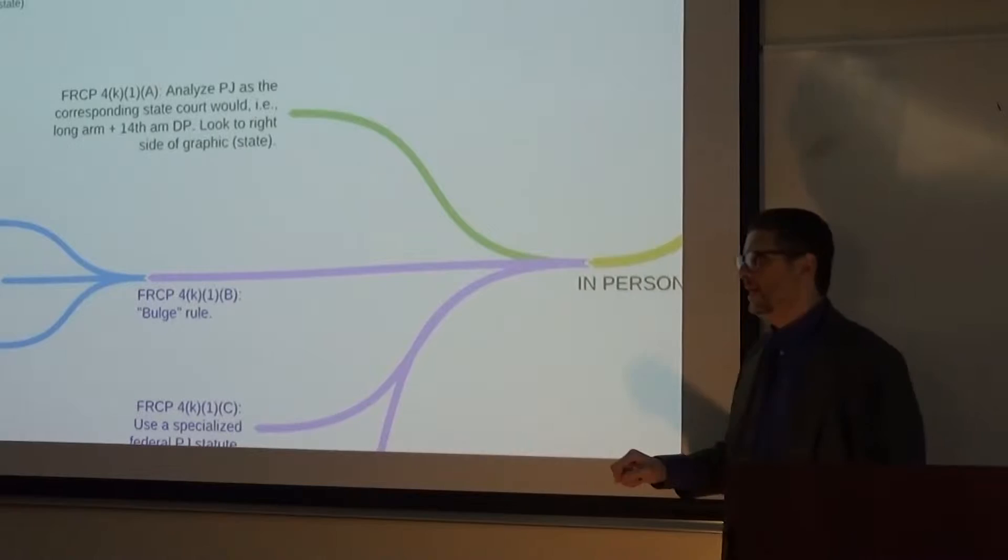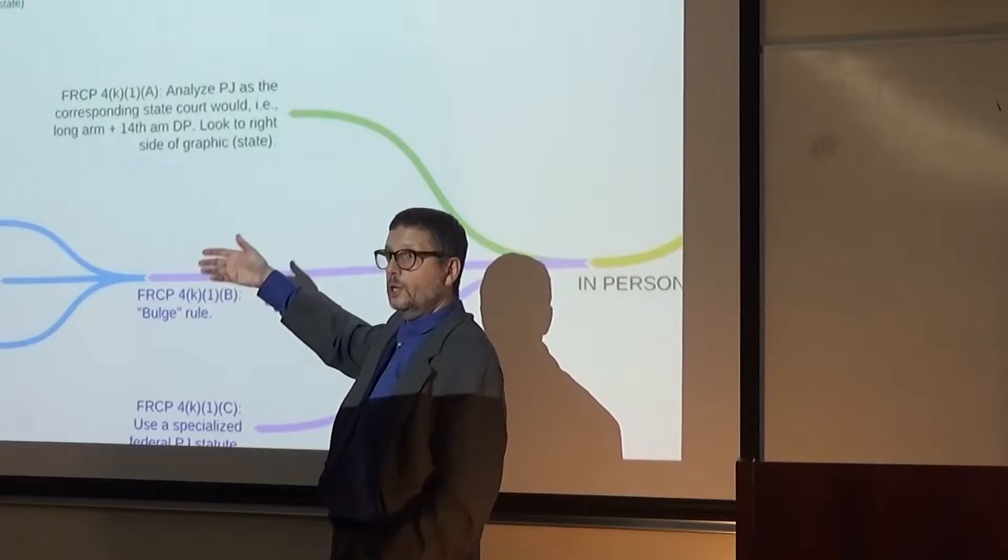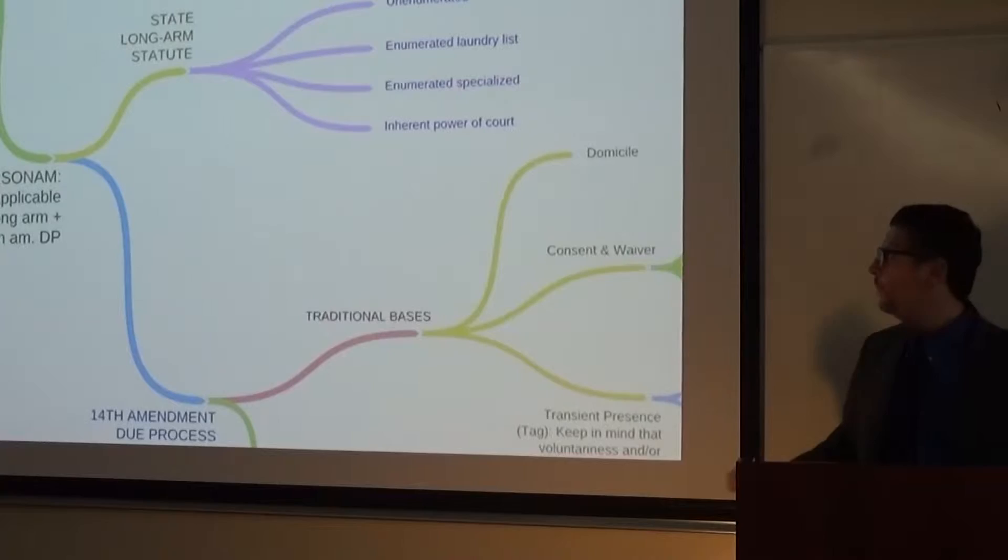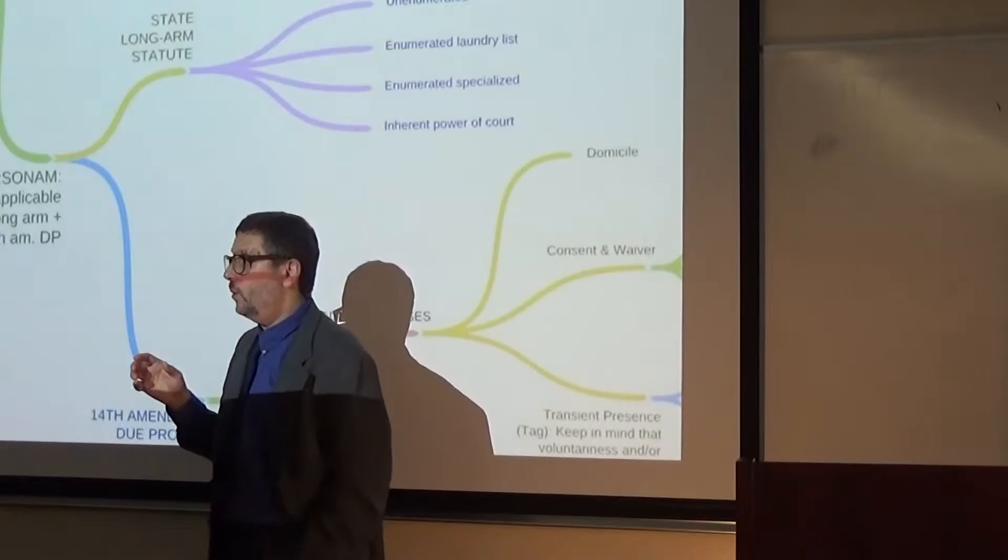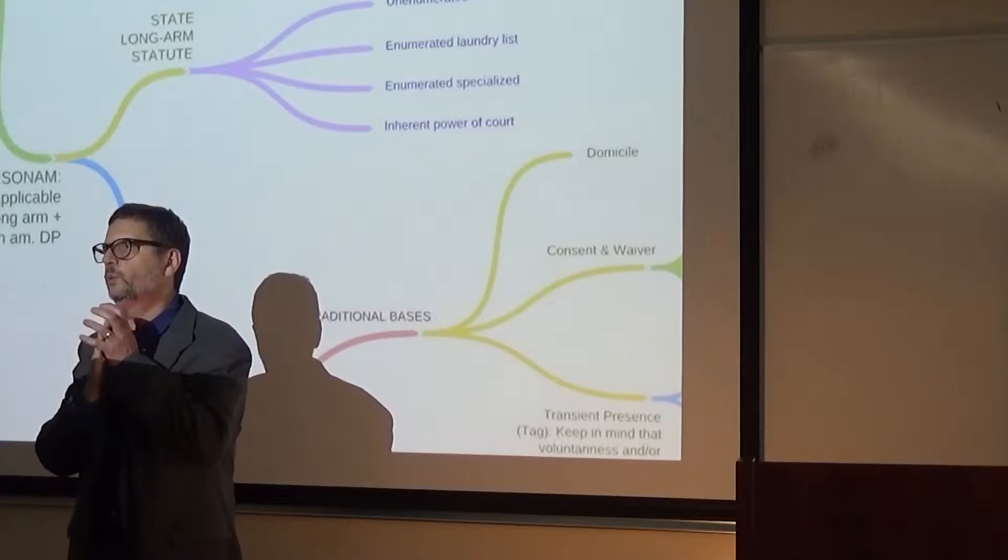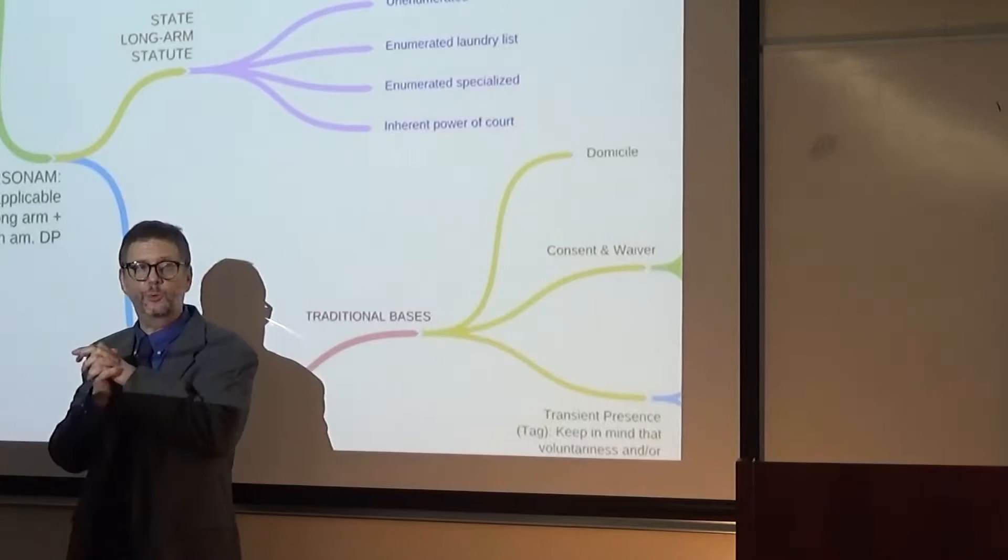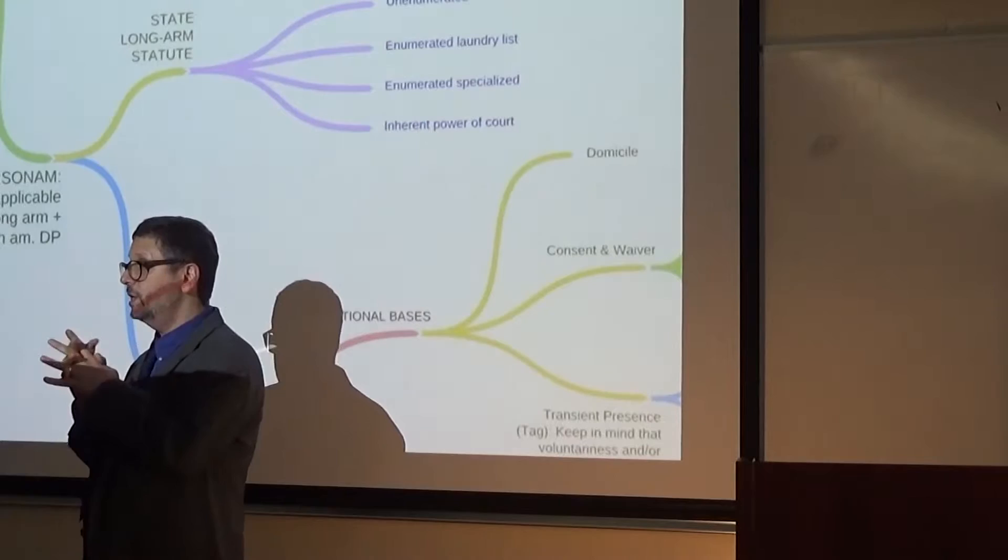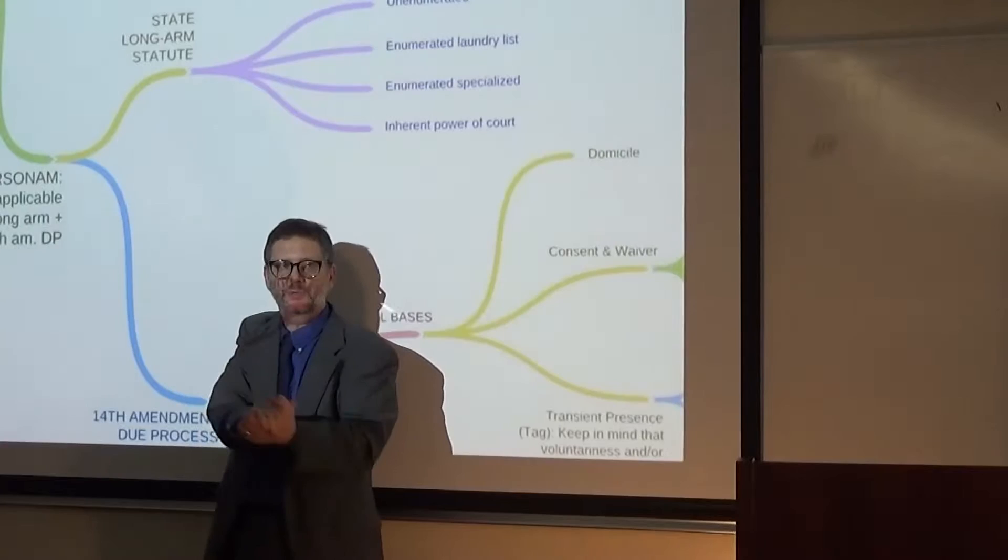Now, let's get to the big E here. Remember I said under 4K1A, in federal court, you analyze in persona jurisdiction the same way the corresponding state court would, right? Long arm plus due process. Well, let's move over here and see how state court would do in persona jurisdiction. Well, the first step for in persona is to look at the state long arm statute. Now, if you're going to be tested on a state long arm statute, then the fact pattern must provide you with a long arm, because each state has different long arm statutes.